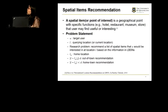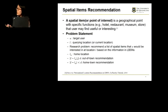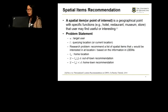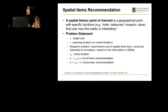The problem becomes this: if we are given a target user and a querying location, we try to recommend a list of spatial items that the target user would be interested in at the querying location, based on the information in the location-based social networks. If the distance between the user's home location and the querying location is larger than a threshold, we call this kind of recommendation the out-of-town recommendation. Otherwise, it's a hometown recommendation.